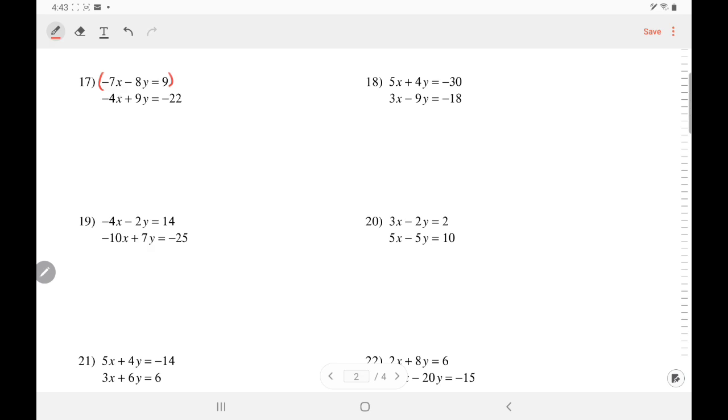Let's say I want to eliminate the x. So the common multiple of 7 and 4 is 28. So I choose to multiply the first equation by 4 and the second equation by negative 7. Negative because I want this to be positive 28 so that they are opposite.